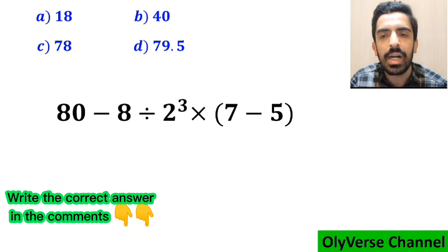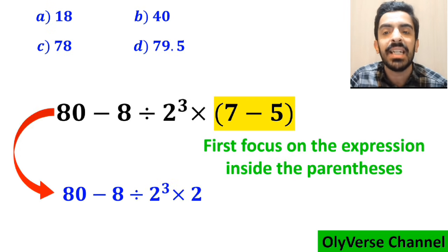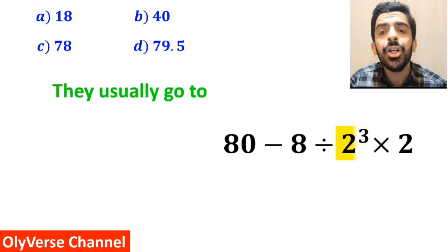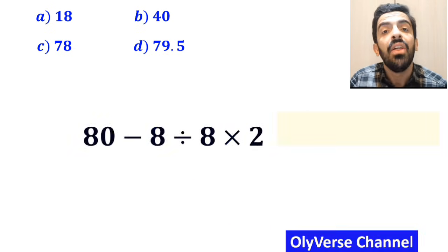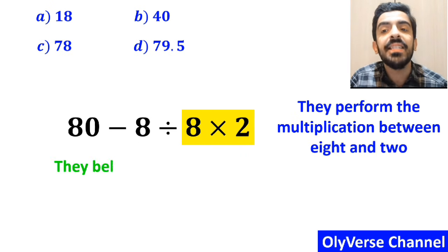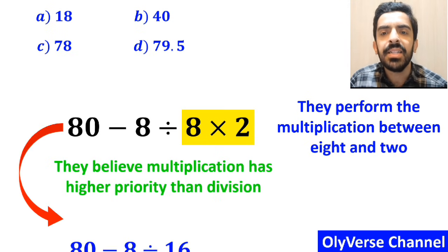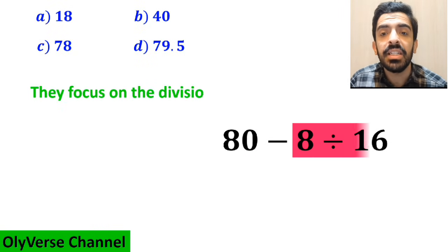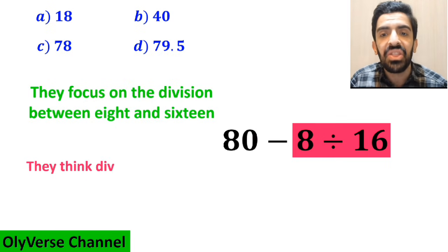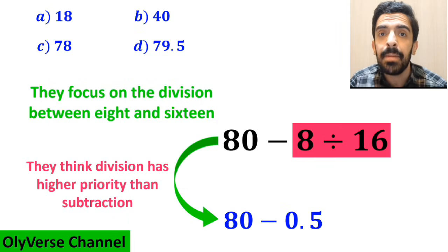Some other people, when solving this question, first focus on the expression inside the parenthesis and replace the whole expression with 80 minus 8 divided by 2 to the power of 3 multiplied by 2. In the next step, they go to the exponent and simplify it to 80 minus 8 divided by 8 multiplied by 2. Then they perform the multiplication between 8 and 2 because they believe multiplication has higher priority than division, rewriting the expression as 80 minus 8 divided by 16. In the final step, they focus on the division between 8 and 16, rewriting this expression as 80 minus 0.5.